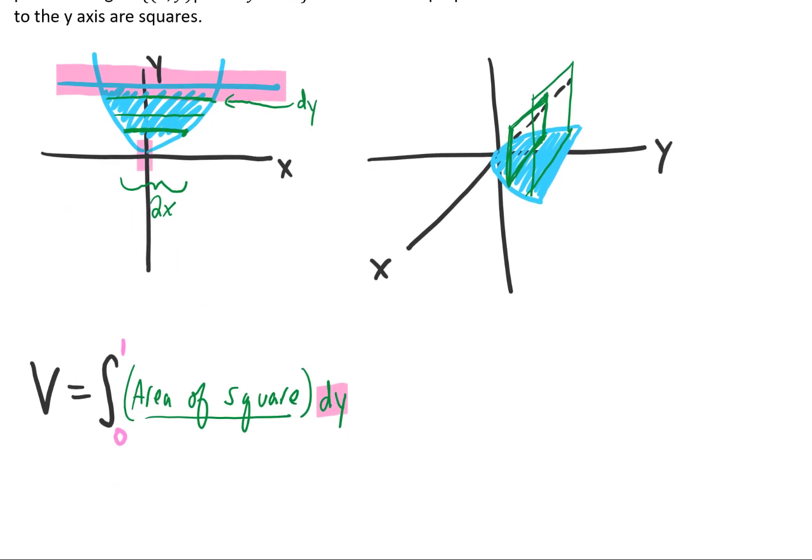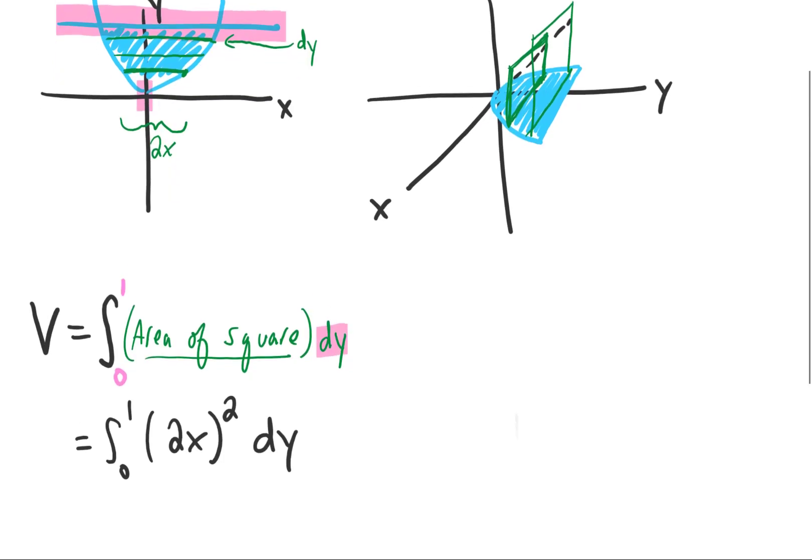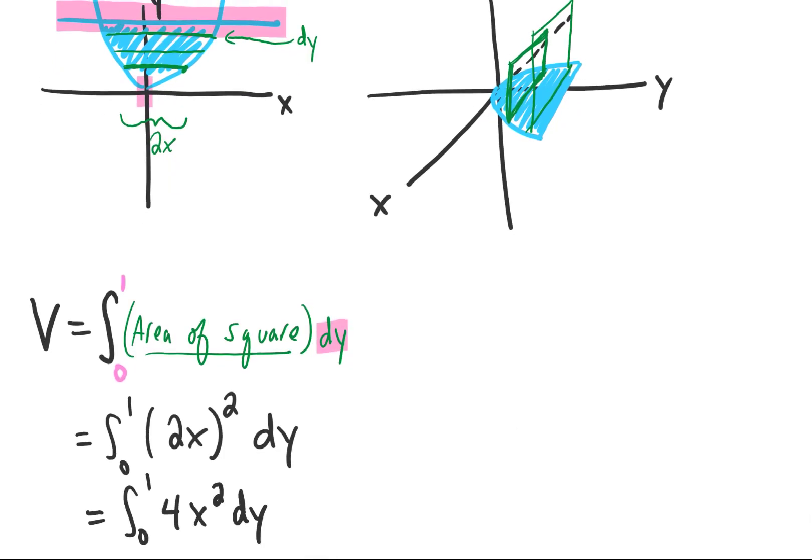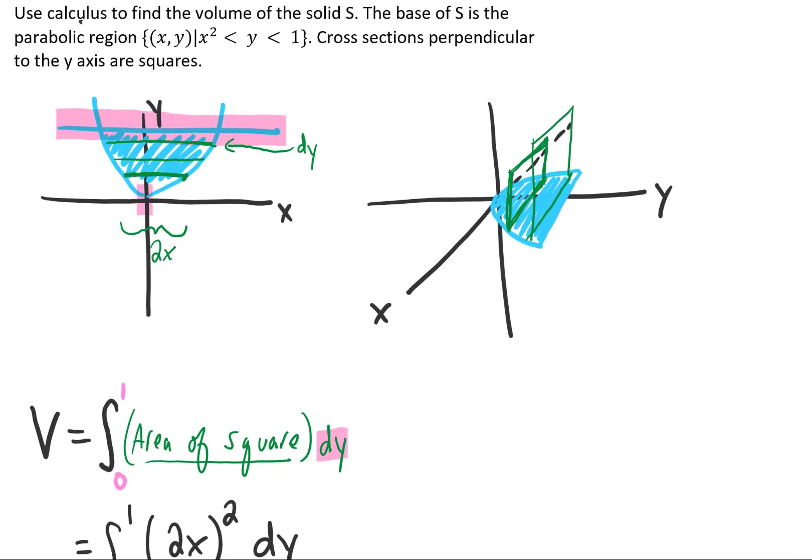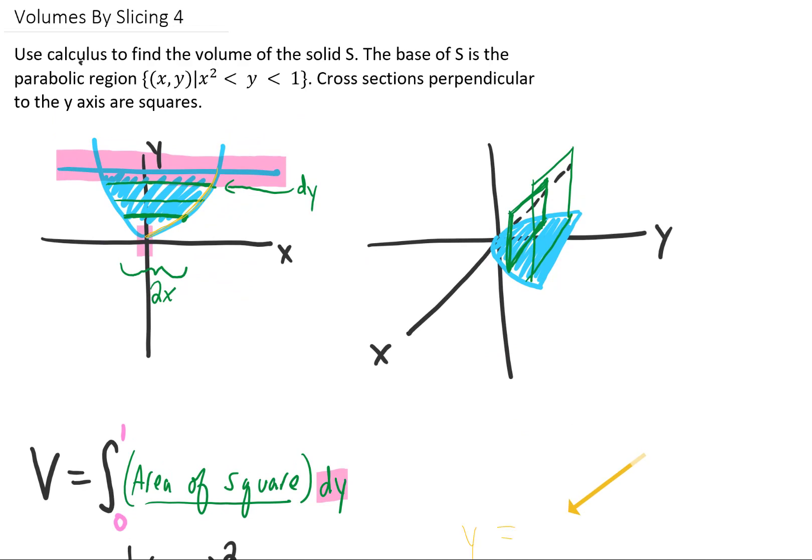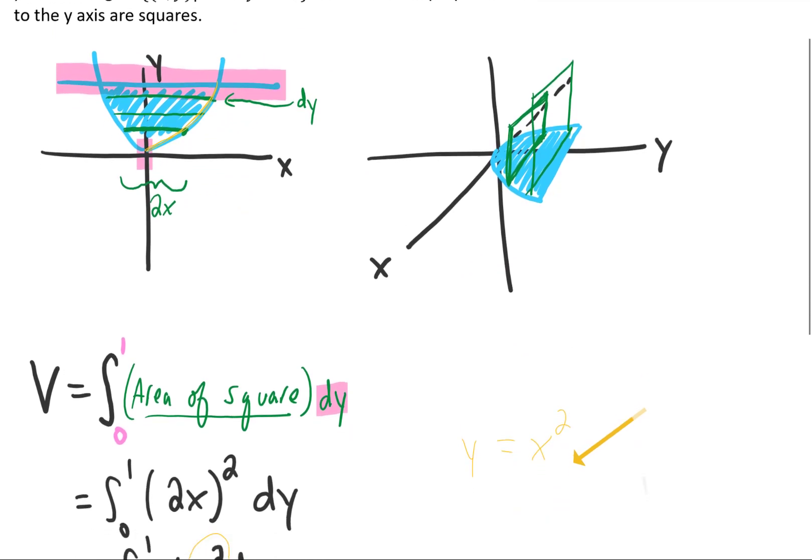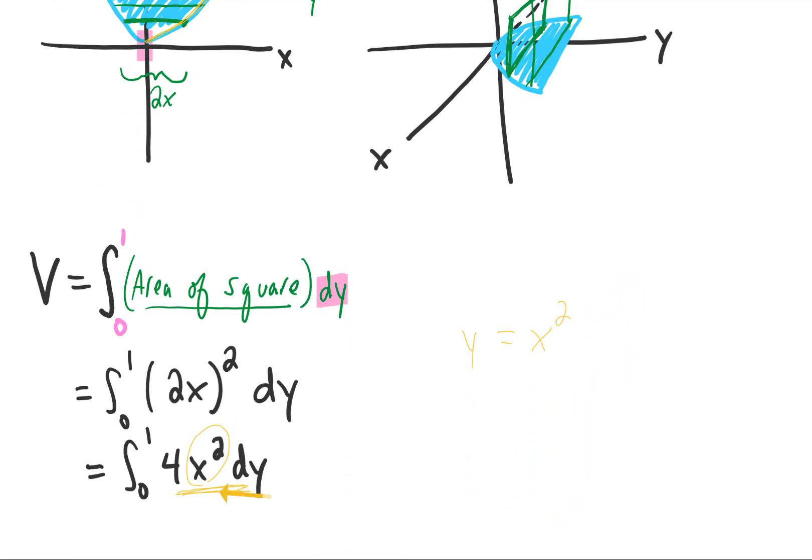So if we wanted to write down what the area of our square was, it would be (2x) squared, which we could simplify to 4x squared. But this is not all that helpful because we want an integral with respect to y. So the question is, do we have some relationship between x and y that would allow us to replace this x squared with something in terms of y? Well, the answer is yes. This curve has the relationship y equals x squared, so we can take this x squared and replace it with a y.